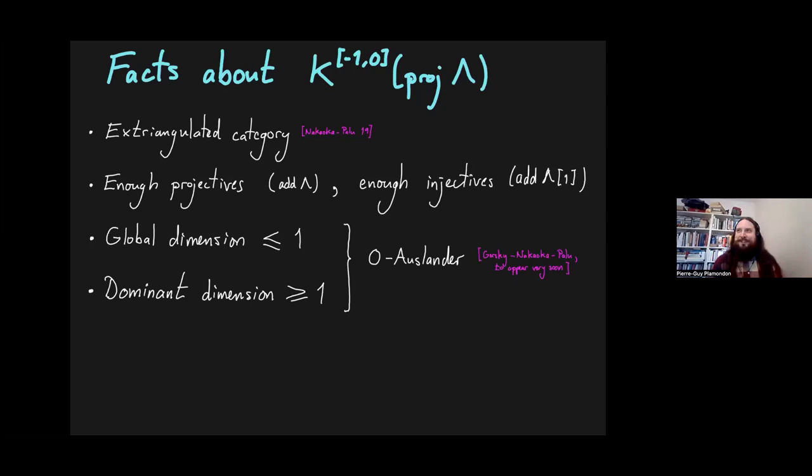Now, I said earlier, maybe you'd like to do not two term complexes, but maybe N+1 term complexes of projectives. You could do that. That slide would still be true. You just have to shift some of the numbers. That's fine. But most of what follows maybe is not true. Maybe you have to change it. I don't know. So I'm going to stick to two term complexes of projectives.